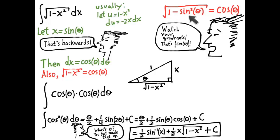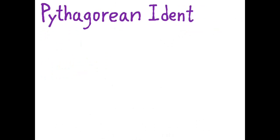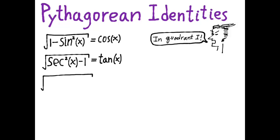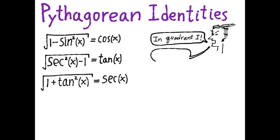I've used one Pythagorean identity, but there are actually three different Pythagorean identities we can use for trigonometric substitution. Restricting to quadrant 1, they are: the square root of 1 minus sin²x equals cosine x; the square root of sec²x minus 1 equals tangent x; and the square root of 1 plus tan²x equals secant x. Using those three substitutions, we can find a trigonometric integral representing any integral with any quadratic form inside a square root. It's a remarkably generally applicable method.